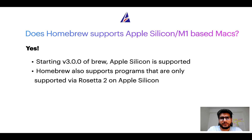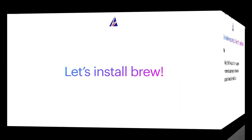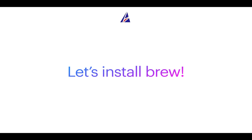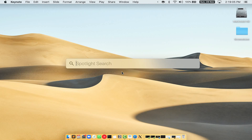Now that I have answered your questions on safety and compatibility of Homebrew, let's get to the installation process. Before we can install anything using brew, we need to install the package manager itself on your Mac. Let me open my Mac here. First, you need to press Command and Space on your keyboard. This will open Spotlight Search on your Mac, and then you have to type terminal.app.